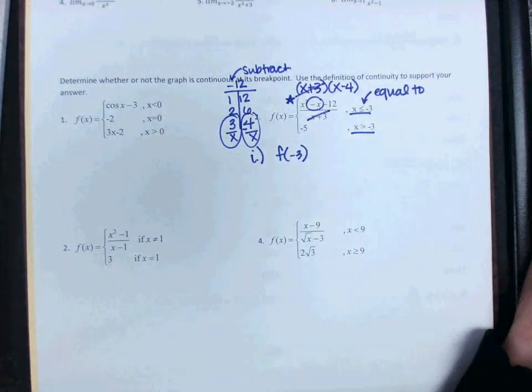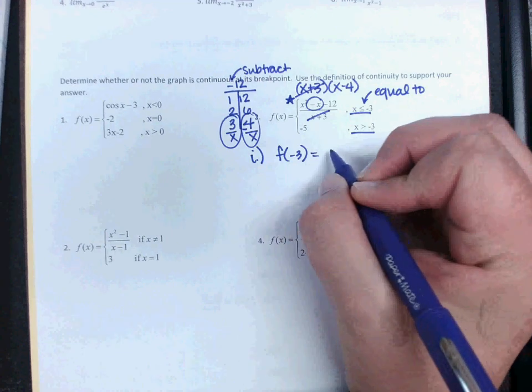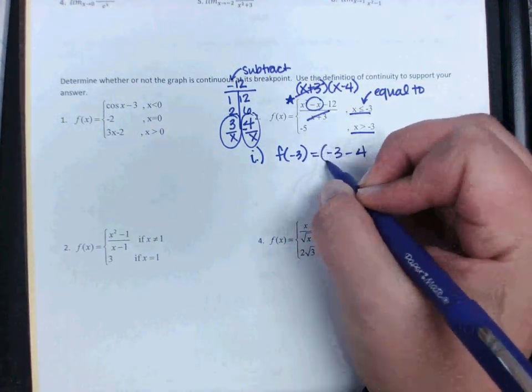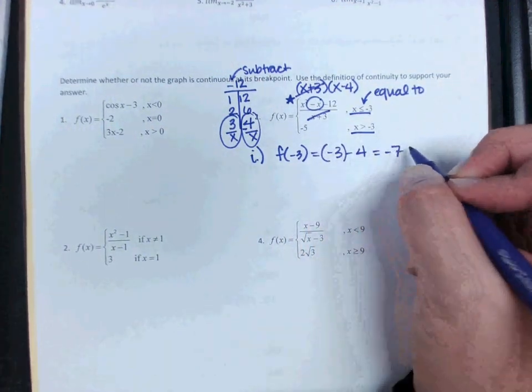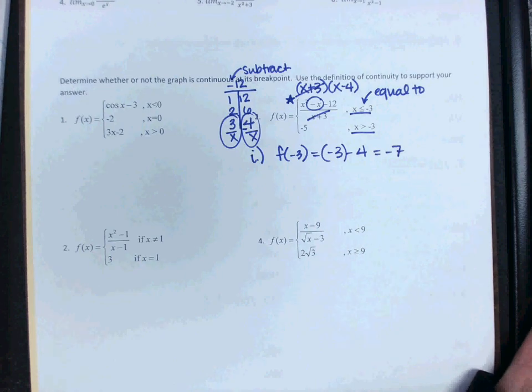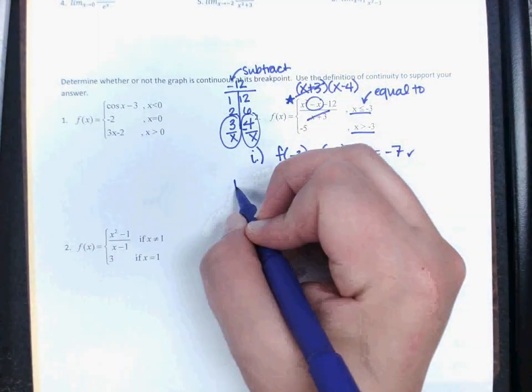And then my x plus 3's cross out. So now it's only x minus 4. And x minus 4, plugging in a negative 3 to that, is negative 3 minus 4 more, which is negative 7. So our y value is defined.